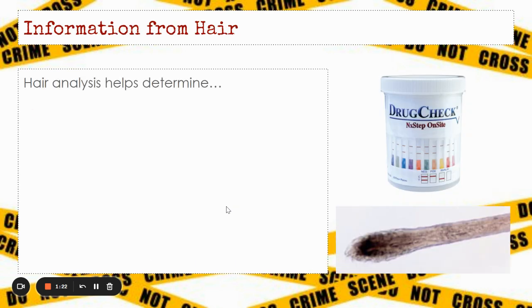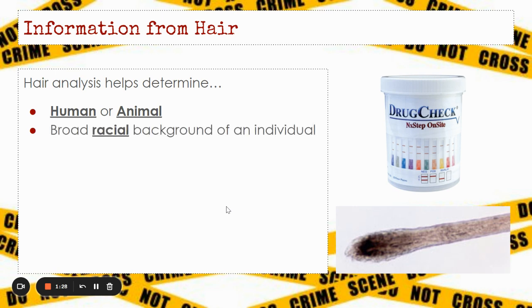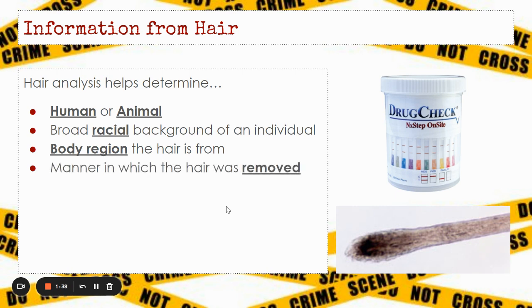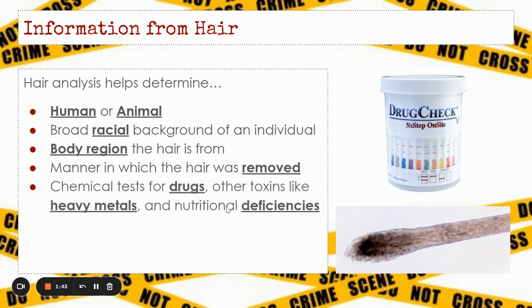When we analyze hair, it helps us determine if the hair is from a human or an animal. We can determine a broad racial background of an individual based on the hair, determine what body region the hair is from — whether it's from their head or another body area — and determine the manner in which the hair was removed, whether it was shed naturally or forcefully pulled. We can also test hairs for drugs and other toxins like heavy metals, and test for nutritional deficiencies.